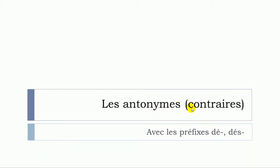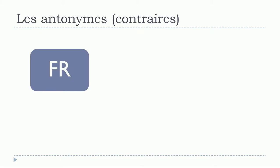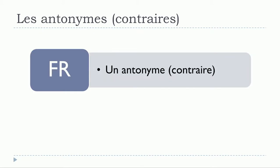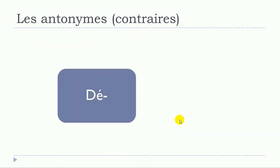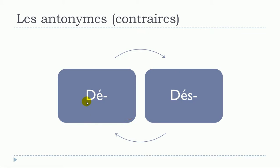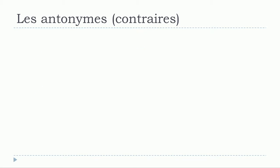We can also use the term les contraires. We'll see only the antonymes or contraires that will be constructed with the prefix D or DÉ (D-E accent aigu) S. An antonyme or contraire in English is almost the same as 'opposite'. We'll see these antonymes constructed with D or DÉS, and we'll first start with the DÉ accent aigu.